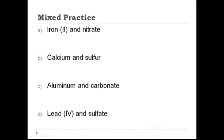Here's some mixed practice. Some of these have polyatomic ions. Some of them have transition metals that need a Roman numeral. Some of them are just very simple ionic compounds. Try all four of these and come back and check your answers. We have iron two, which is iron two plus. Nitrate, which is NO3 minus. This two is going to come down here. The invisible one goes down here. And you end up with Fe(NO3)2.